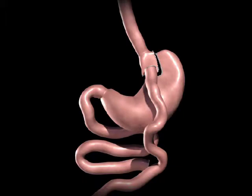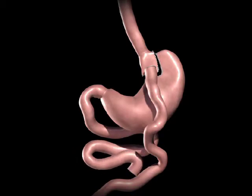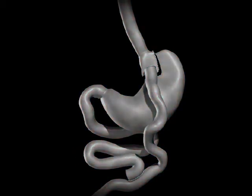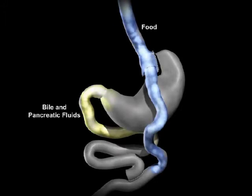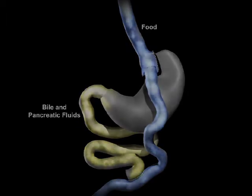Bypassing a portion of the small intestine decreases the absorption of calories. The upper portion of the small intestine is reconnected to the lower portion of the intestine. The bile and pancreatic fluids from the liver and pancreas allow food to be completely digested.